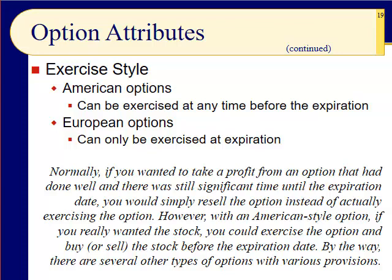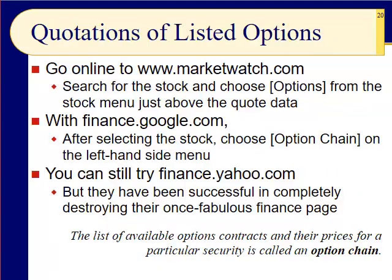Slide 19: the exercise style. The two major styles are American and European. American options can be exercised at any time — you don't have to wait until the expiration date. European options can only be exercised at expiration. If you wanted to take a profit from an option that had done well with significant time remaining, you would simply resell the option instead of exercising it. With an American style option, if you really wanted the stock, you could exercise the option and buy or sell the stock before the expiration date.